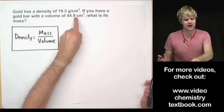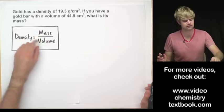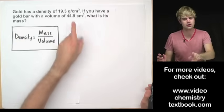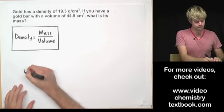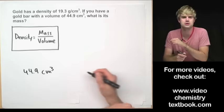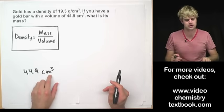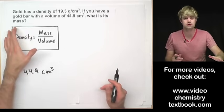So in this example all we have is a volume and we have to take the density to figure out what the mass is going to be. So let's start out with this volume here, 44.9 cubic centimeters. Now how are we going to get from cubic centimeters to grams which is the mass?